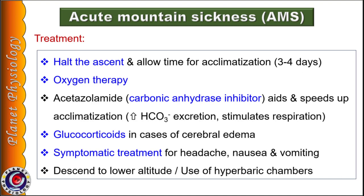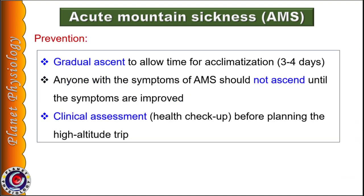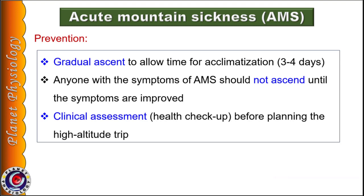Prevention is always better than cure. To prevent acute mountain sickness, one should ascend gradually so that the body can acclimatize to hypoxia. If any symptoms of acute mountain sickness appear during ascent, the person should not ascend further until symptoms improve. It is also better to get a health checkup before planning to go to high altitude.